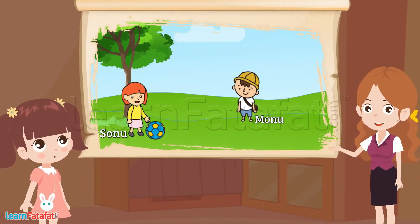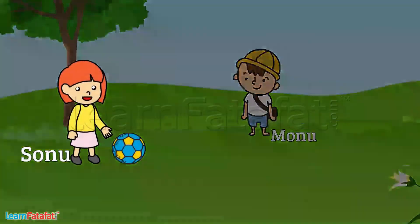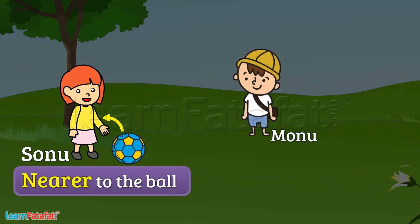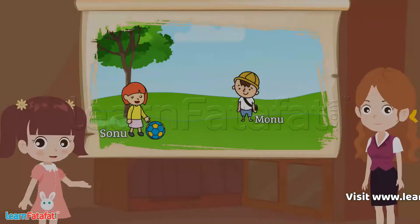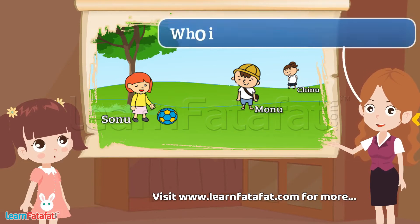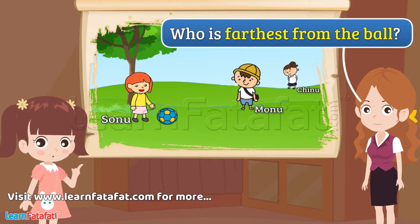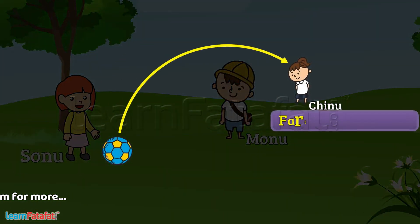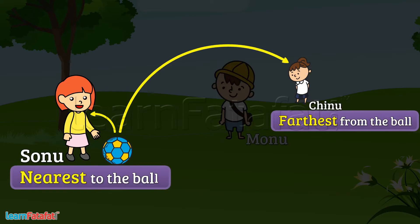Can you tell me who is nearer to the ball? Sonu is nearer to the ball and Monu is farther from the ball. Now see this picture. Can you tell me who is farthest from the ball? Chino is farthest from the ball and Sonu is nearest to the ball.